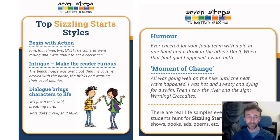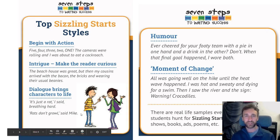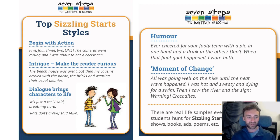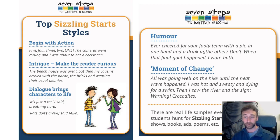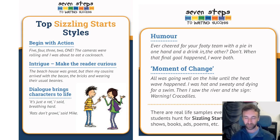Intrigue — make them curious. "The beach house is great. But then my cousins arrived with the bacon, the bricks and wearing their usual beanies." Again, creates a sense of what's happening next in the story. Dialogue is super, super important — brings the characters to life. "It's just a rat," I always said, breathing hard. "Rats don't growl," said Mike. Humour is always great — put something funny in. "Ever cheered for your footy team with a pie in one hand and a drink in the other? Don't. When the final goal happened, I wore both." And a moment of change: "All was going well on the hike until the heat wave happened. I was hot and sweaty and dying for a swim. Then I saw the river and the sign warning — crocodiles." So lots of change happening at the very beginning — really quick, punchy starts to stories.